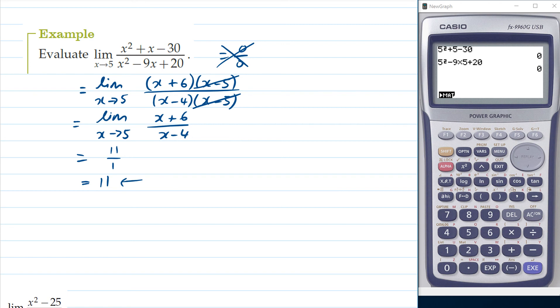And what this is saying is that this function here tends towards 11 when we put 5 into it. But when we put 5 directly into it there's no way to evaluate it.